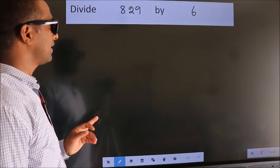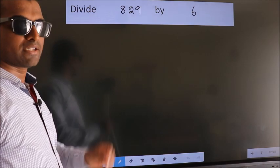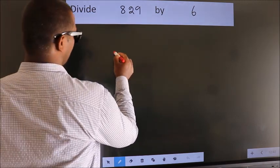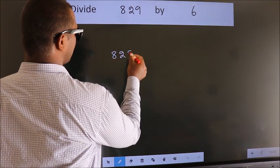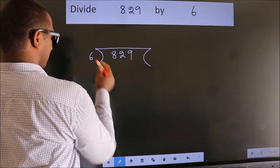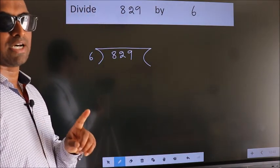Divide 829 by 6. To do this division, we should frame it in this way. 829 here, 6 here. This is your step 1.